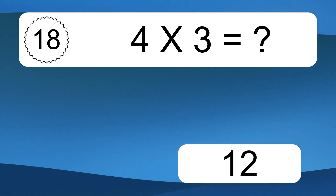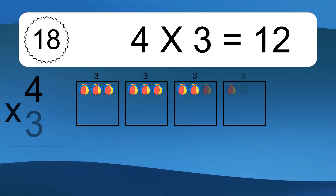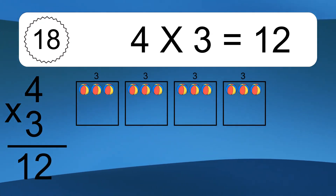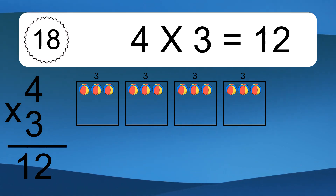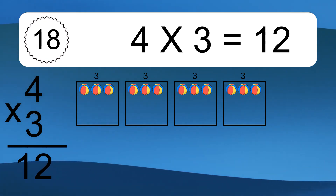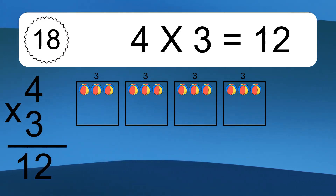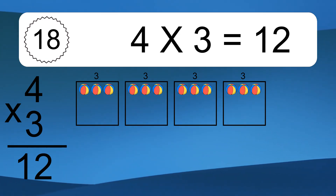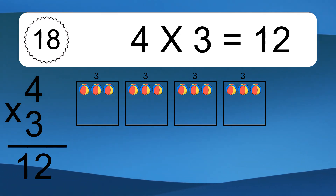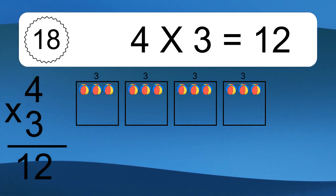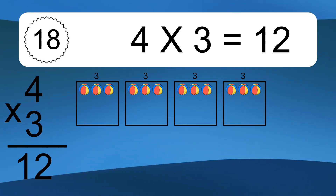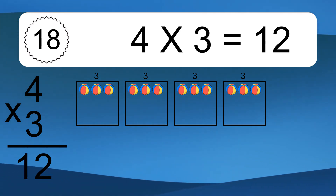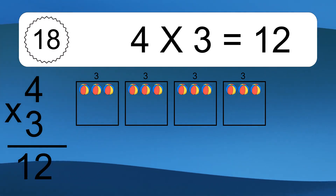4 times 3 equals 12. We have 4 boxes, and each box has 3 colorful balls inside. If you count all the balls in all the boxes together, you will have 4 times 3 balls. This equals 12 balls.